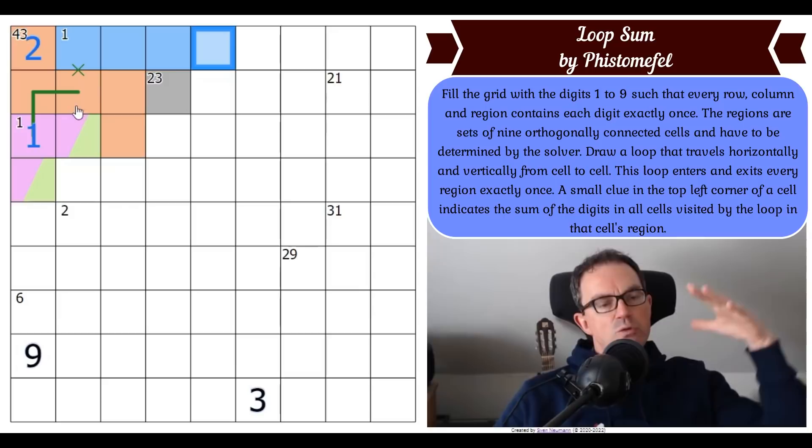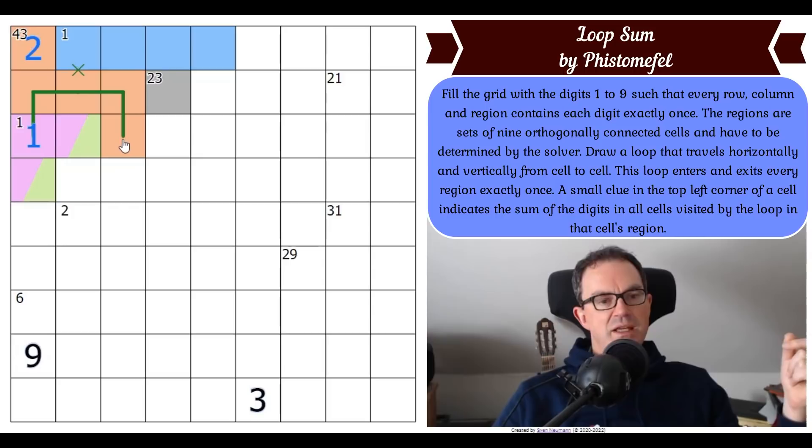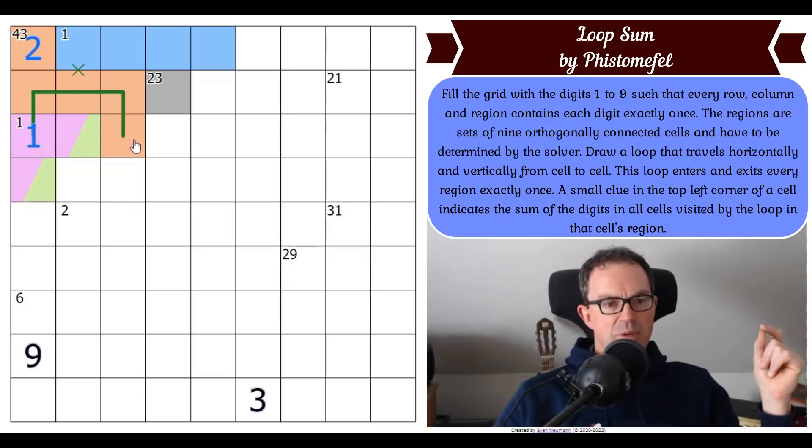The loop must now stay in orange until the end of orange - it cannot leave because it must take all eight remaining cells in orange before exiting, otherwise there would be a re-entry into orange, which is not allowed.